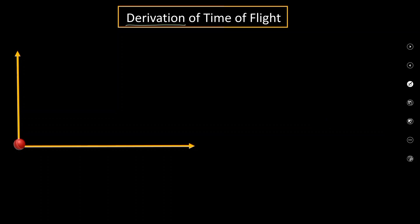Hello there, today we are going to understand the derivation of time of flight. The formula of time of flight is equal to 2u sin theta divided by g.